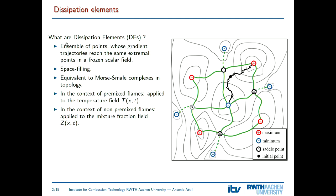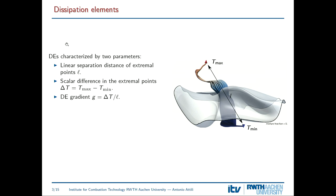Dissipation elements are space-filling: when you collect all of them, they include the entire field. They can be used to build statistics and analyze the structure of the underlying scalar field. They are also equivalent to Morse-Smale complexes in topology. We can apply this analysis to the temperature field in a premix flame and to the mixture fraction field in a series of non-premix flames. This sketch shows one dissipation element around a non-premix flame, with the surfaces representing the flame surface.